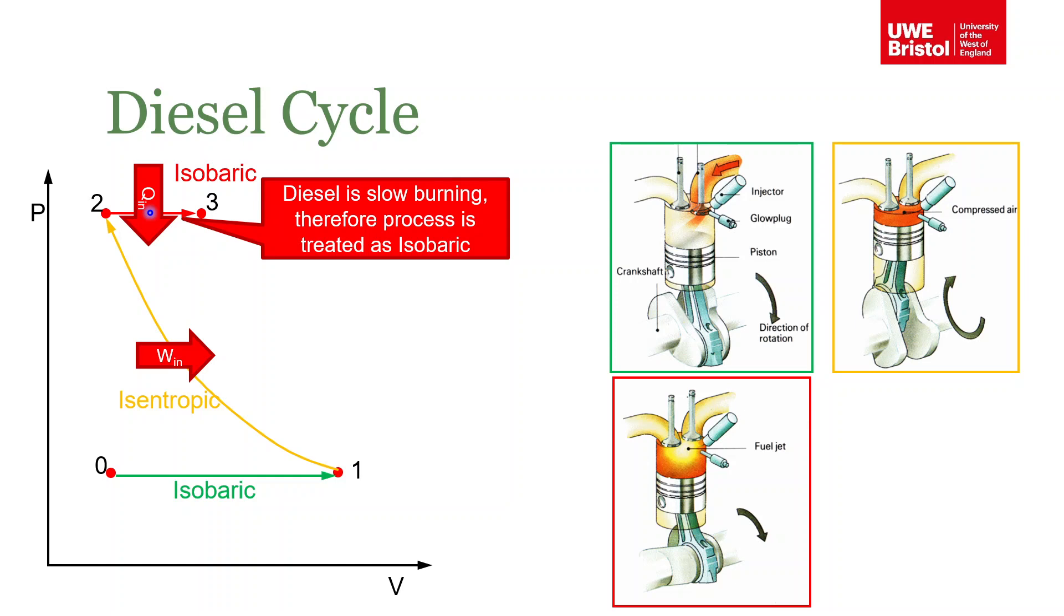The fuel is being injected and it's burning, which is releasing heat and causing the temperature of the gases to increase. Because the temperature increases, the pressure increases. But as the pressure is increasing it's pushing on the piston and forcing it down, so the volume is increasing. That change in pressure that's increasing as a result of the combustion is being offset by the decrease in pressure as the volume is increasing due to the piston going down.